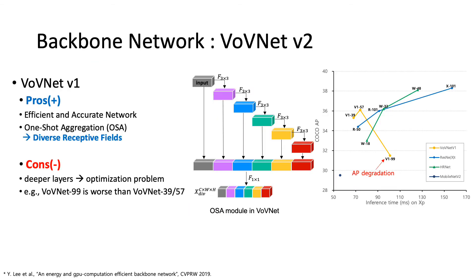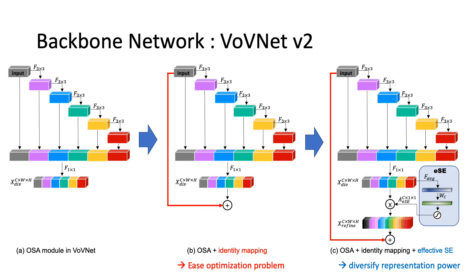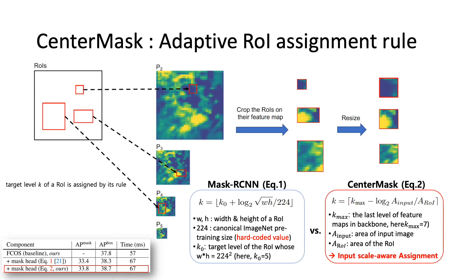We improved the BobNet backbone network to version 2. We added residual connections and an effective SA attention module into BobNet. We also designed an input scale-aware target assignment function.